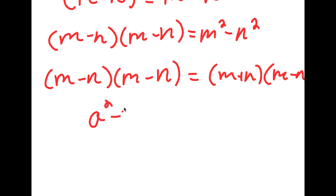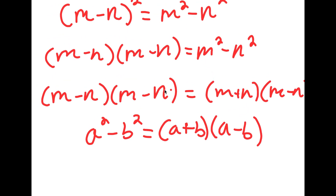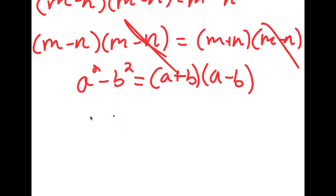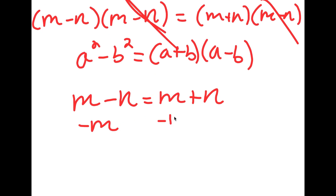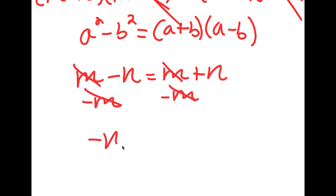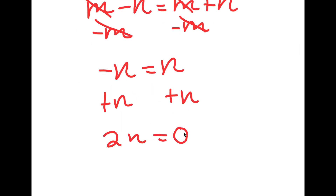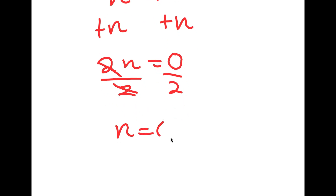Because if I have something in the form a squared minus b squared, this is equal to a plus b times a minus b. So as you see, we can simply divide both sides by m minus n and cancel these two out. Now I'll be left with m minus n is equal to m plus n. Meaning if I subtract m on both sides, I get negative n is equal to positive n. If I add n on both sides, I get 2n is equal to 0, meaning n is also equal to 0.